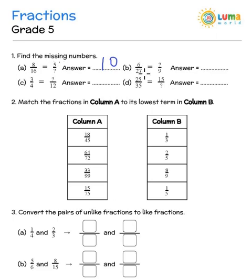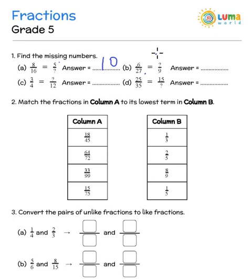Let us look at method 2 for the next one. 6 divided by 27 is something divided by 9. Now can I see how 27 has become 9? You will notice that 27 divided by 3 gives you 9, and here you will do the same thing to the numerator. So 6 divided by 3 would give you 2.